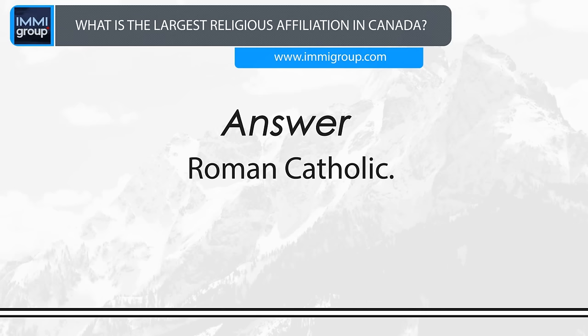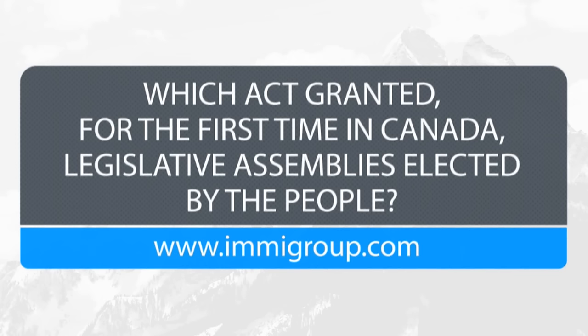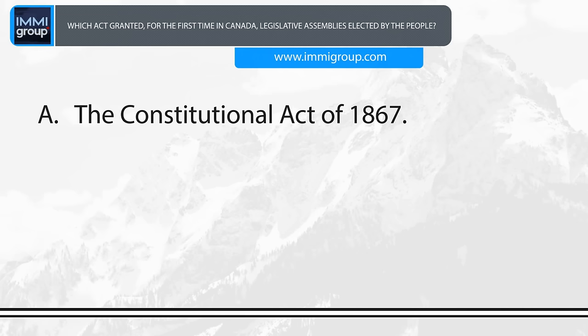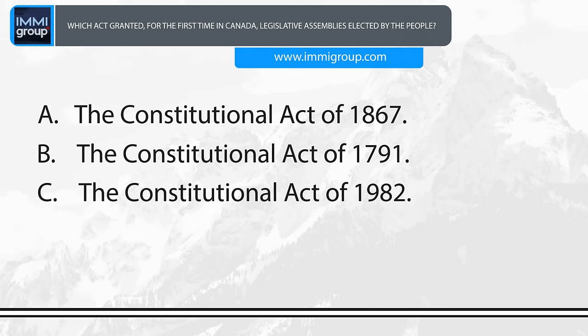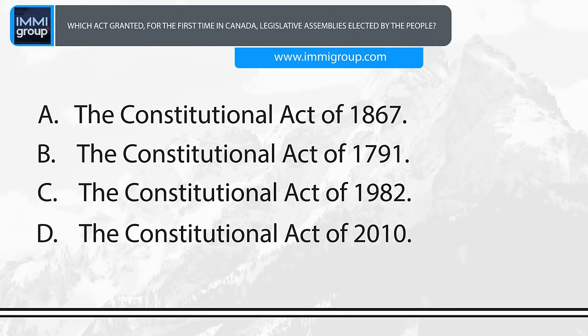Which act granted, for the first time in Canada, legislative assemblies elected by the people? A. The Constitutional Act of 1867. B. The Constitutional Act of 1791. C. The Constitutional Act of 1982. D. The Constitutional Act of 2010. Answer: The Constitutional Act of 1791.